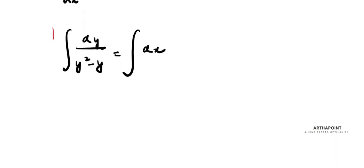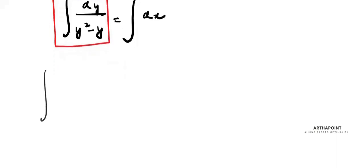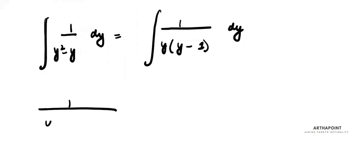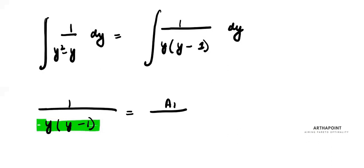Now I will focus on integrating 1/(y² - y) dy. This can be rewritten as 1/(y(y-1)) dy. Always remember: whenever you get a product of two things in the denominator in integration, you write it as a sum of two fractions — A1/y + A2/(y-1).